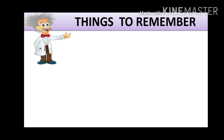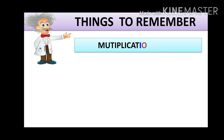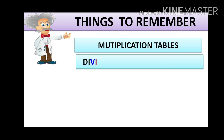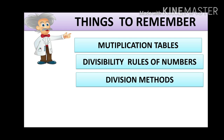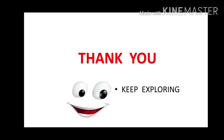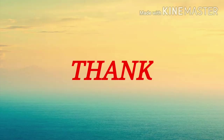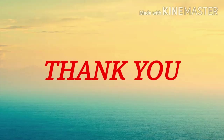So things to remember. To find out the factors, there are 3 important things. First: multiplication tables — we should be very good at those. Second: divisibility rules of numbers, meaning how we know whether a number is divisible by 2, 3, or 5 without actually dividing. Third: all the divisional methods — if you are not able to remember the divisibility rule, you have to learn the divisional methods properly. Thank you and keep exploring.